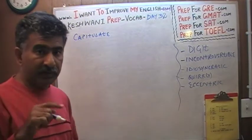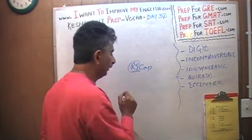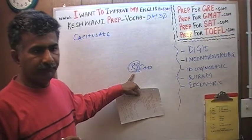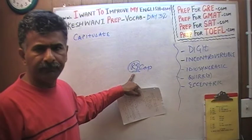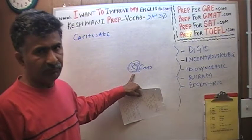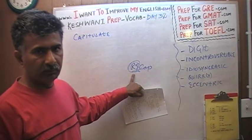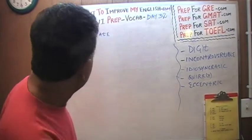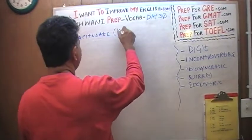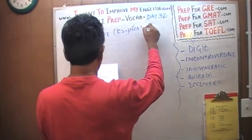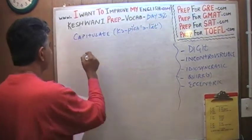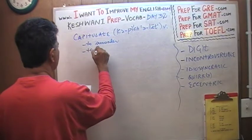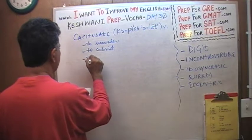In the word recapitulate, the first two letters are not a prefix — they are part of the word. Therefore, capitulate is not related to recapitulate. Recapitulate means to summarize. What does capitulate mean? It means to surrender, to submit, to yield.